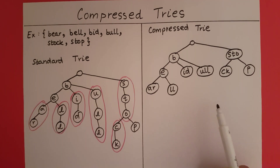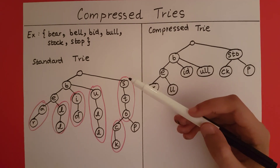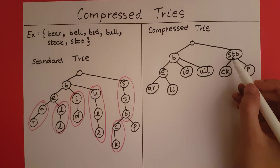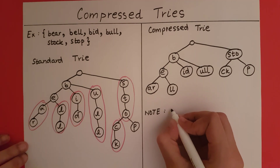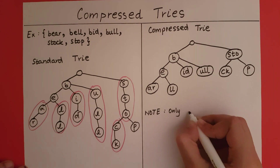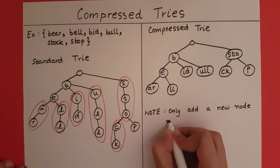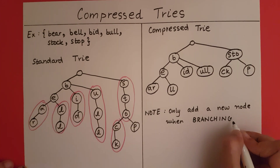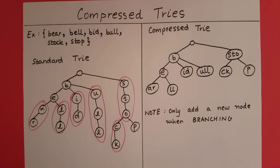It is important to note that in a compressed trie, we are only going to add a node whenever we are branching out. If we are going to have a singular path, we are not going to add a separate node for that — we are just going to add it to the sequence of letters stored within that node. Only add a new node when branching; otherwise add that letter to the sequence of letters within that node.